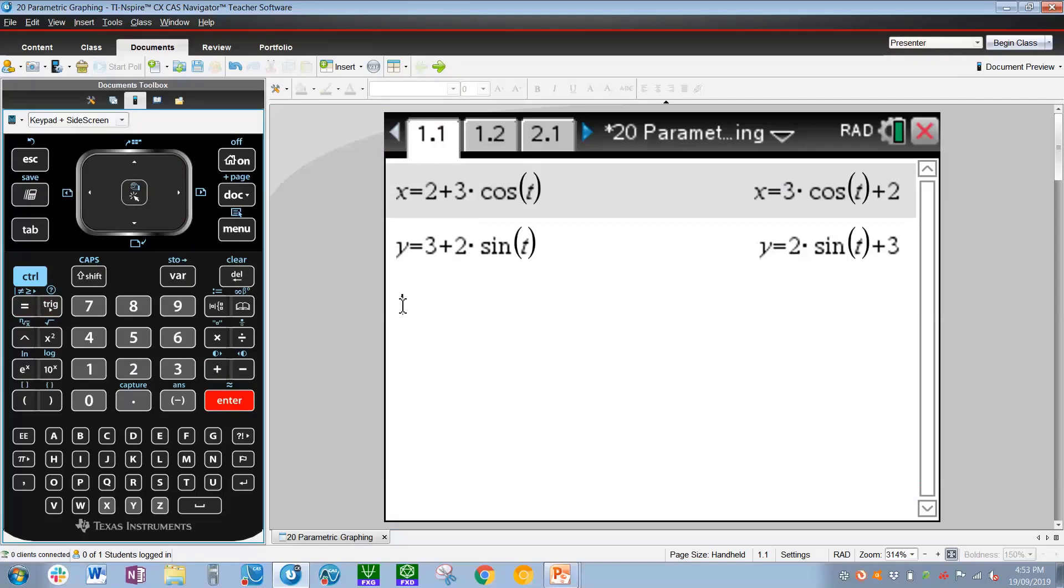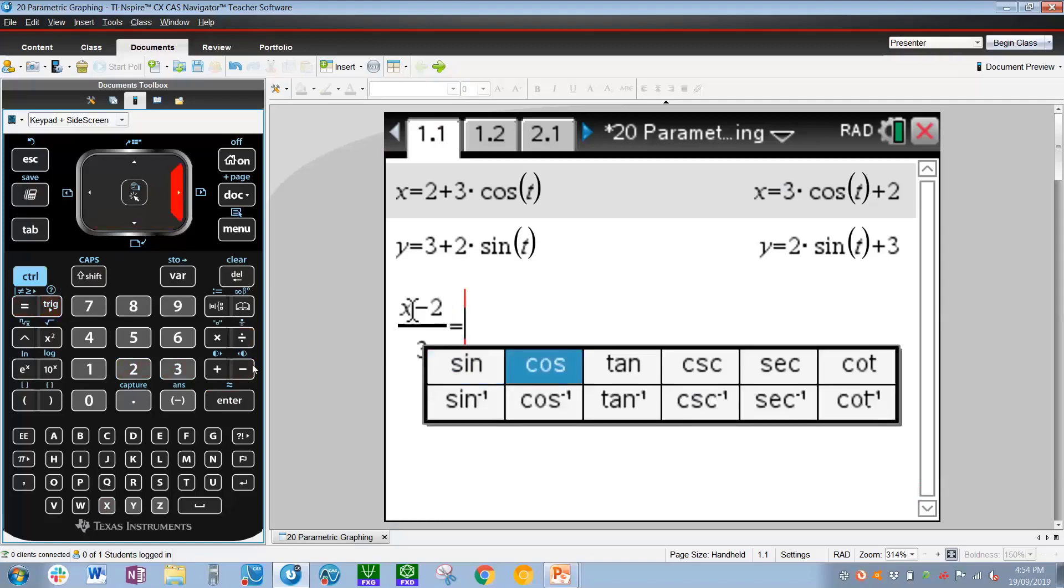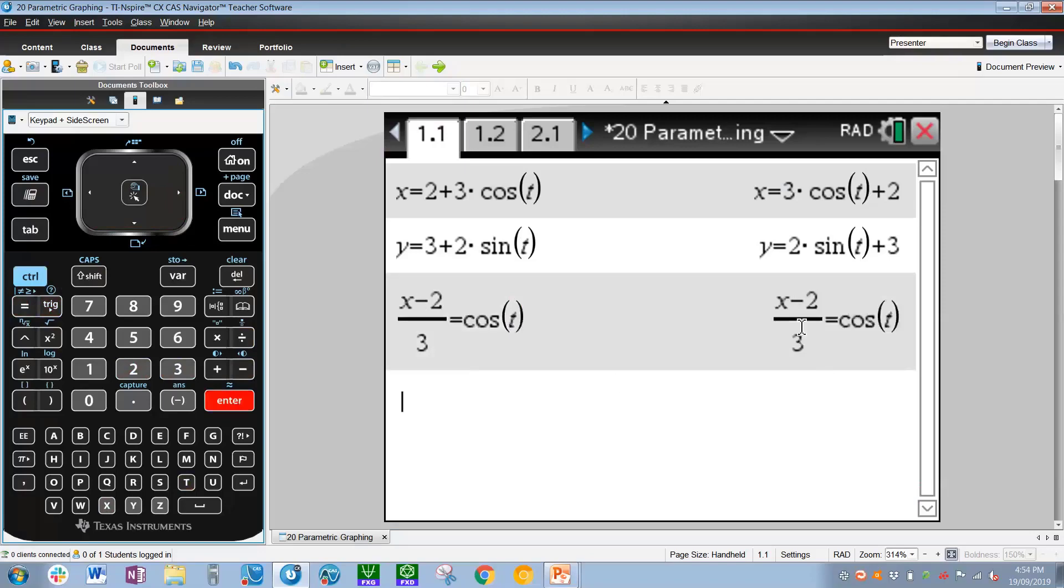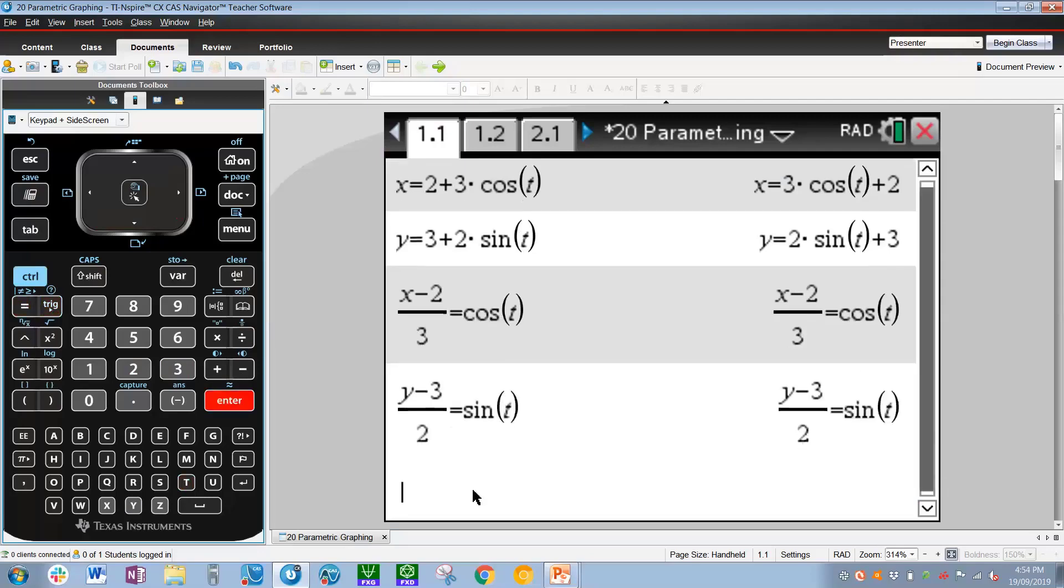The Pythagorean identity is cos squared plus sin squared equals 1. In order to use the Pythagorean identity, we have to solve for cos and sin. So for the x equation, the way I'm going to solve for cos is by creating a fraction, control divide, and then x minus 2 on the numerator divided by 3. So that's solving this equation for cos, and that equals trig right arrow cos t, enter. We've now got the expression that equals cos of t. In a similar fashion, we can do the same thing with sin. So y minus 3 all over 2 equals sin. So trig sin of t, enter. We've now got cos and sin isolated by themselves.